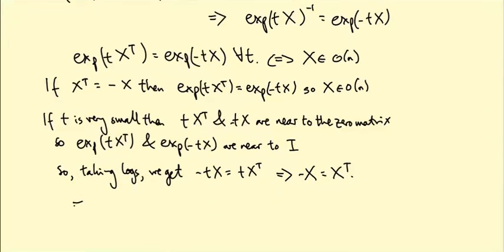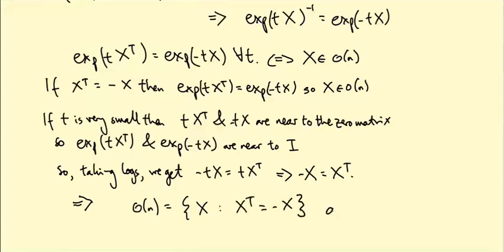So this tells us that little o(n), the Lie algebra, is the set of matrices X such that X transpose equals minus X. In other words, it's the antisymmetric matrices.